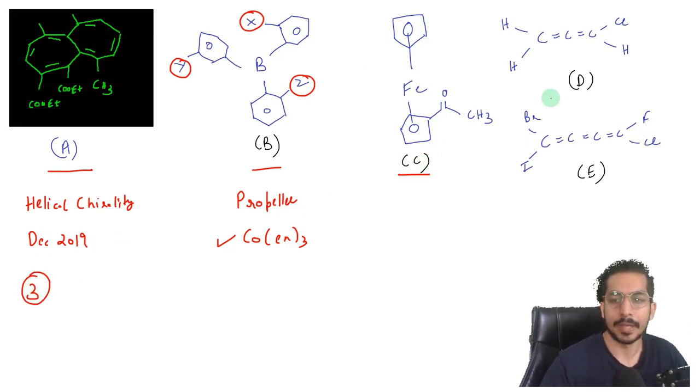These two are going to be optically active and this one is as well optically active, so the correct answer for this question was three. When you come to these two structures, both of them are allenes. This over here is a planar allene, planar in nature because you can see there are three double bonds. When there are odd number of double bonds present, then that particular allene is planar. Since it's a planar molecule, it will be optically inactive because it will have a plane of symmetry present.